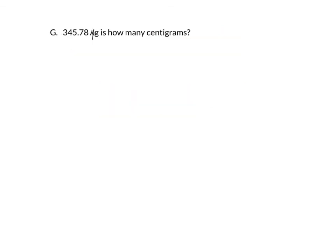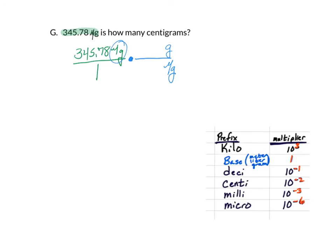Finally, letter G asks: if there are 345.78 micrograms, how many centigrams are there? Please pause while you work it out. We start with 345.78 micrograms over 1. We have micrograms on top, so we put micrograms on the bottom and grams on top for the next fraction. You should have this ratio memorized: 1 microgram is 10 to the negative 6 grams. Since the micrograms cancel, we go from grams — putting grams on the bottom — to centigrams on top. 1 centigram is 10 to the negative 2 grams.